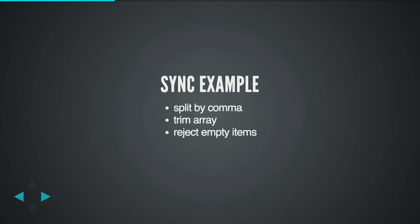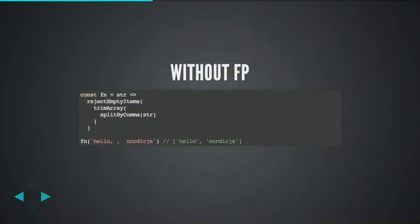How can we do that? We'll look at two examples: one for synchronous programming and one for asynchronous programming. For synchronous programming, let's say we take a string, split it by comma, trim the array, and reject empty items. How would we do that in imperative programming the usual way? We have a function which takes a string, then inside nested calls it will split by comma, then trim the array and reject empty items. But it's hard to read — it's working perfectly, but it's hard to read.